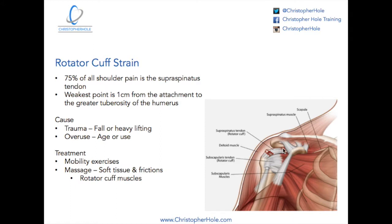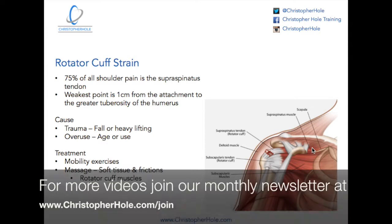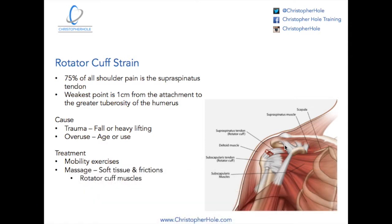The supraspinatus is the rotator cuff that comes across the top of the scapula. If I was to spin this body around, you would see the shoulder blade and a little groove across the top. It sits in that groove, comes underneath the shoulder blade and the clavicle — the collarbone — and then joins onto the top part of the humerus, which is known as the greater tuberosity.